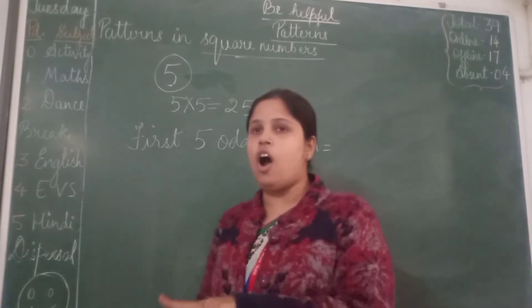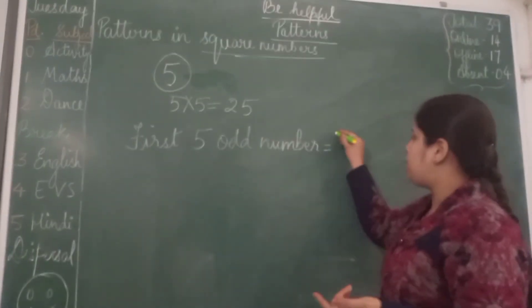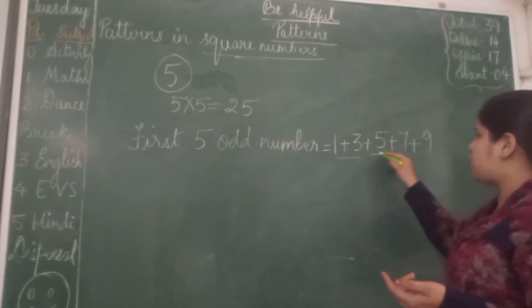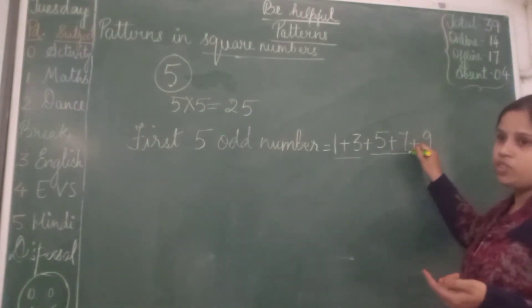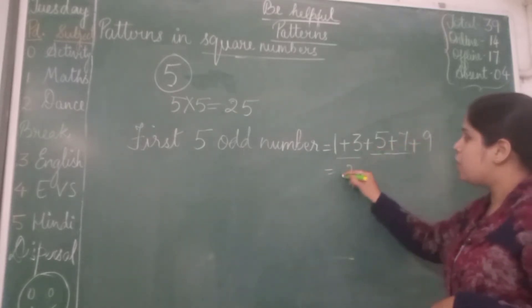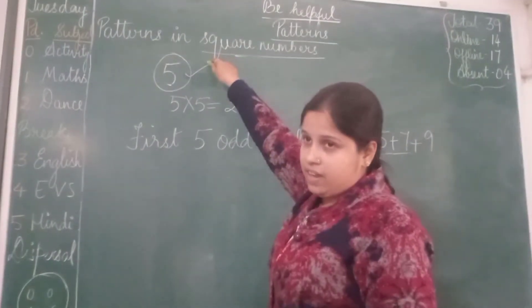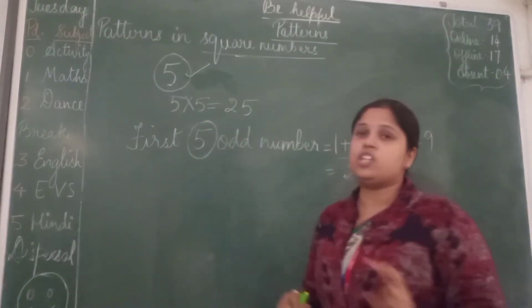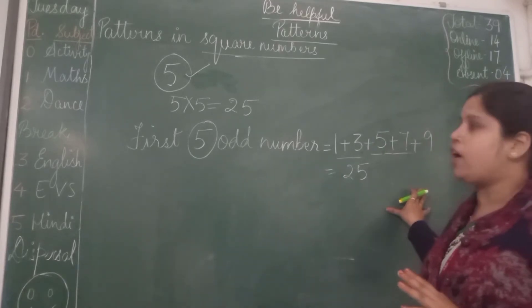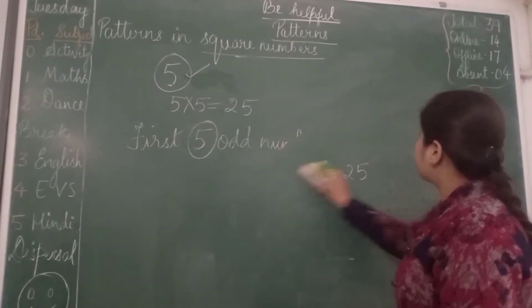Now odd numbers you all know - even is the multiple of 2 and odd is not the multiple of 2. So first 5 odd numbers are 1 plus 3 plus 5 plus 7 plus 9. 3 plus 1 is 4, 4 plus 5 is 9, 9 plus 7 is 16, and 16 plus 9 is 25. So this is the second property of finding the squares. Whatever the number is given, we will be adding that many odd numbers from the first, and after adding those odd numbers we will get the square number. So this was again one of the property of square numbers.